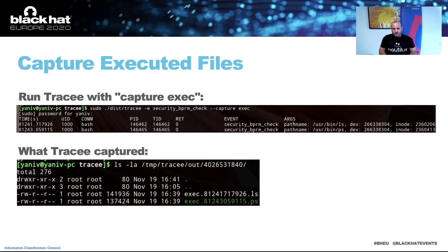Another artifact that can be captured using Tracy is executed files. Using the CaptureExec flag, Tracy saves all files that were executed since Tracy was started. In the above example, you can see the security_bprm_check event, which happens every time a binary is executed. We used ls and ps commands in the background, and as you can see, these executables were saved to the Tracy output directory.